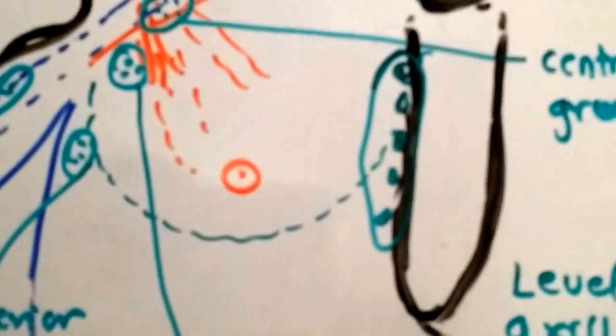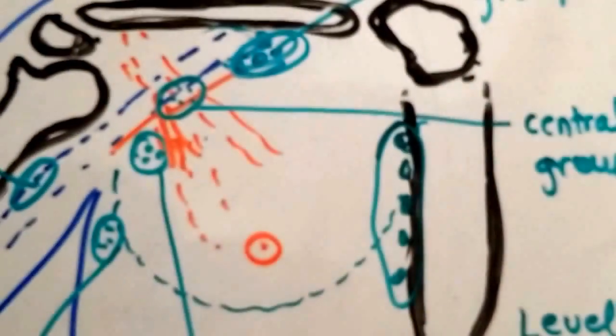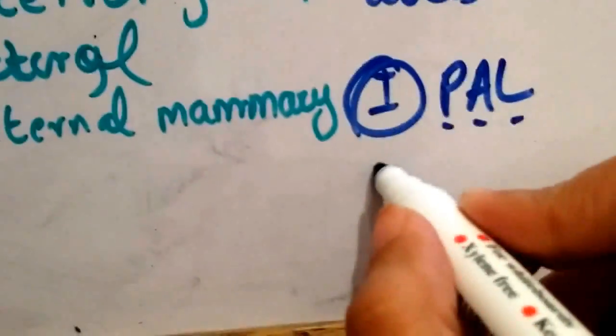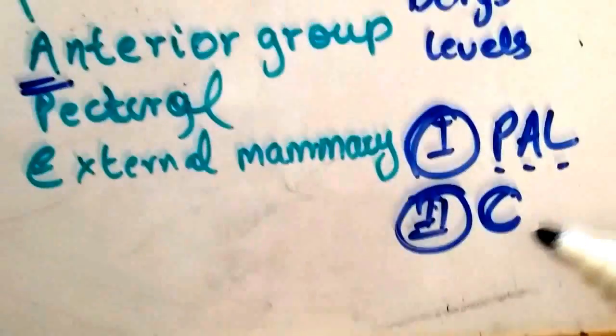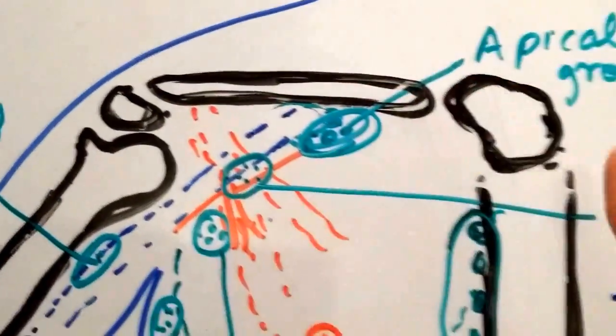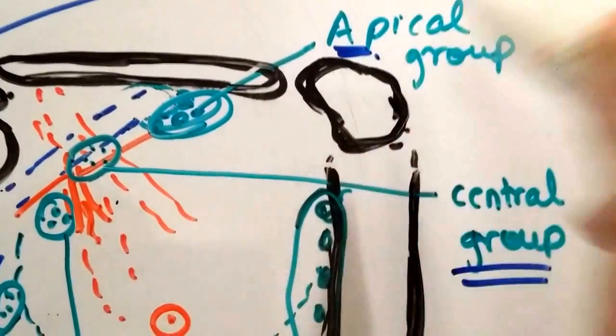Level two lymph nodes lie behind the pectoralis minor muscle, and the only lymph node group we drew there is the central group — so that is level two. Level three lymph nodes are the ones which lie above and medial to the pectoralis minor muscle, and we've drawn only one group there: the apical group of lymph nodes, so they are level three.